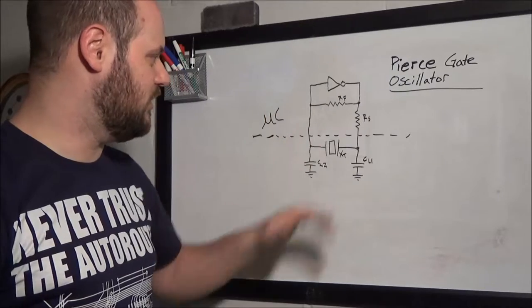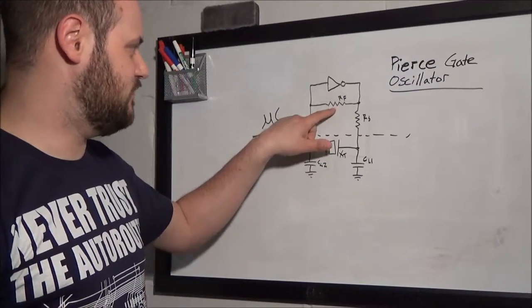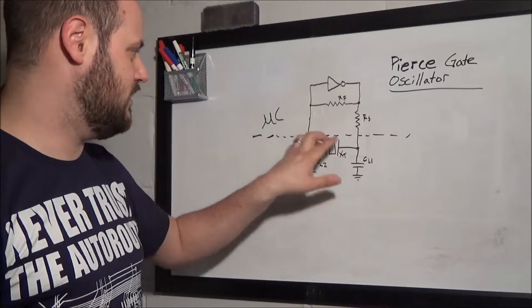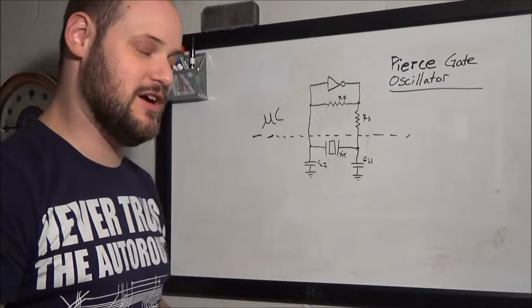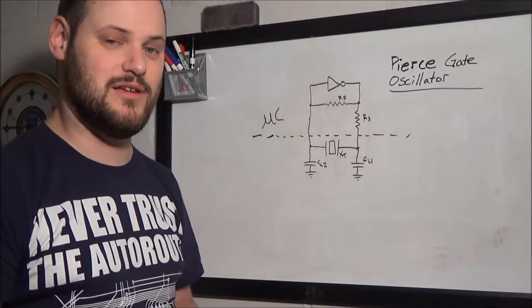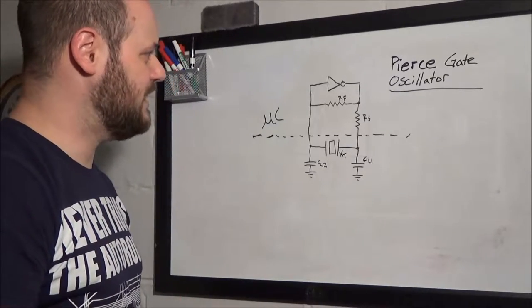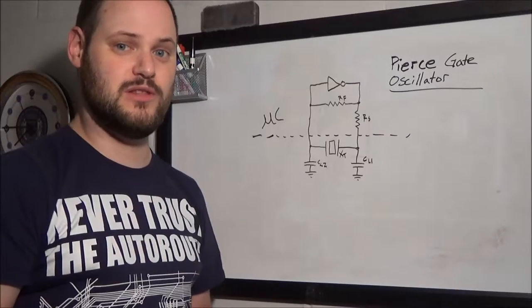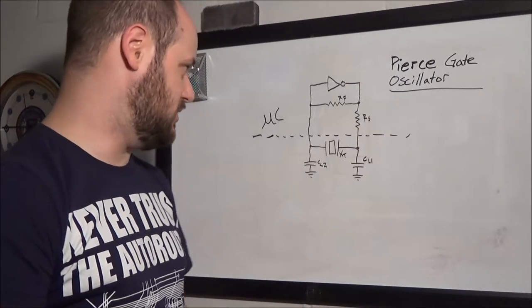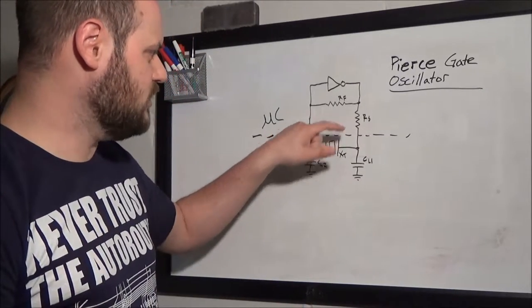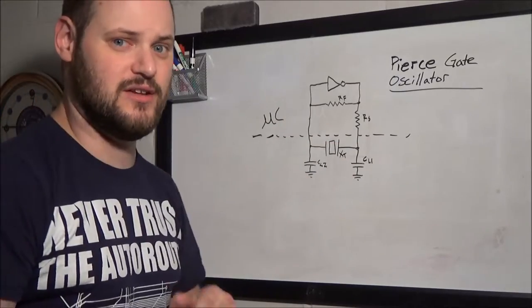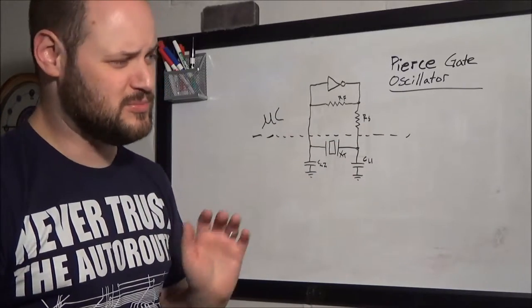Sometimes it varies a little bit. Occasionally, you'll see that this feedback resistor, RF, will be on the outside there, probably around 1 meg, something like that. I know a lot of Freescale microprocessors are that way. And sometimes in low frequency, especially with watch crystals around 32 kilohertz, your series resistor is going to be external as well. Not always, but sometimes.